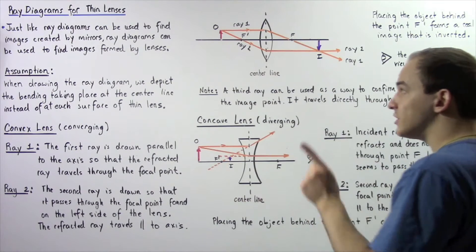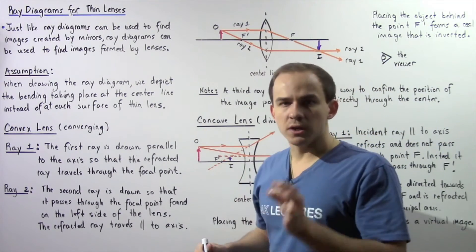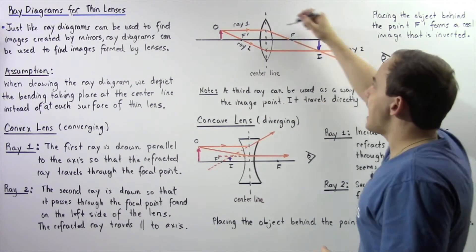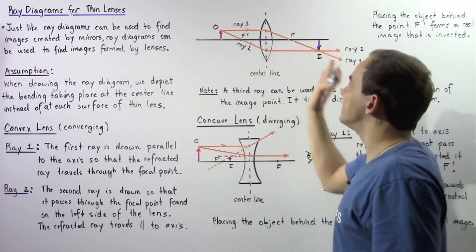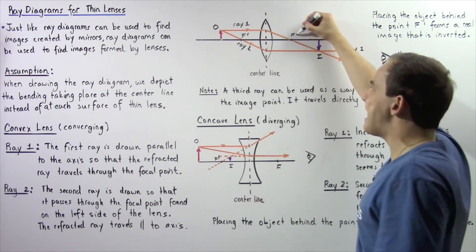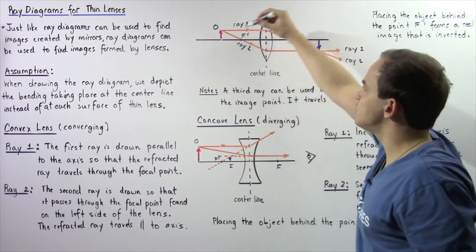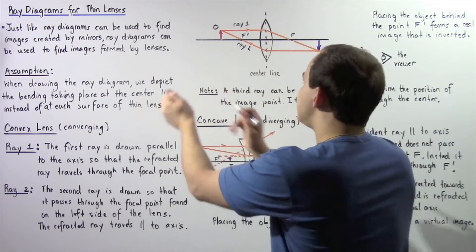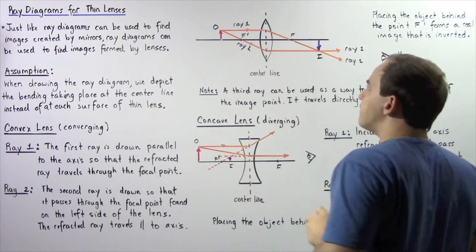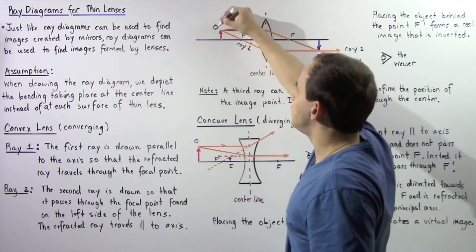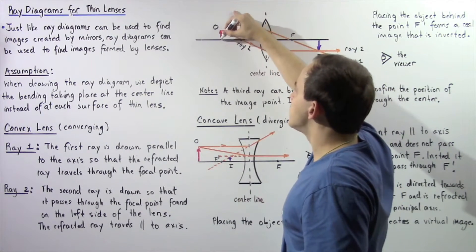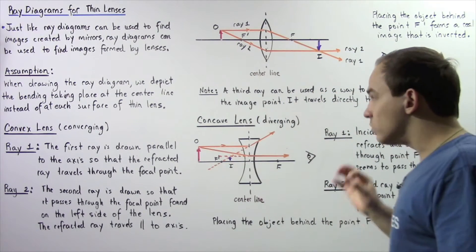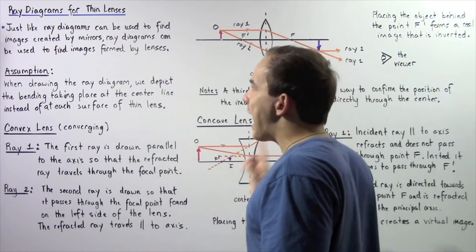Unlike mirrors, lenses have two focal points. We have a focal point found on the right side and a focal point found on the left side — this focal point is known as F and this focal point is known as F prime. Let's suppose we take the object and place it to the left of F prime, and we call our object simply O. This red arrow represents the height of our object.